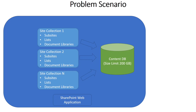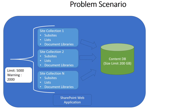If you talk about site collection limits per content database, the limit is 5,000 — meaning you can create 5,000 site collections in one content database. However, this limit is also subject to the data size limit of 200 GB. That is an important concept to understand clearly.